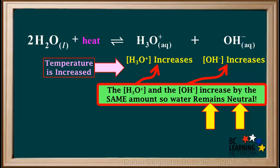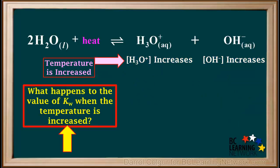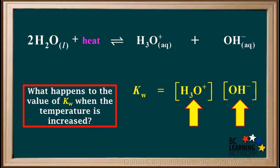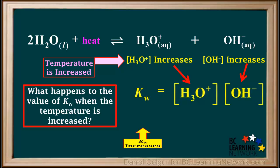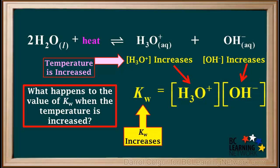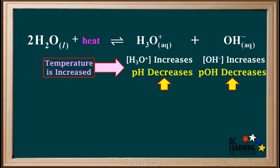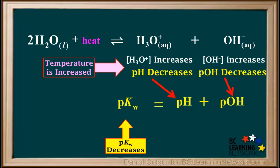When the temperature is increased, the concentration of hydronium and the concentration of hydroxide increase by the same amount, so the water remains neutral. Kw is defined as the hydronium ion concentration times the hydroxide ion concentration. So as the temperature is increased and both ion concentrations increase, so does their product, Kw. Also, as the temperature is increased, the pH and the pOH both decrease, so their sum, pKw, also decreases.